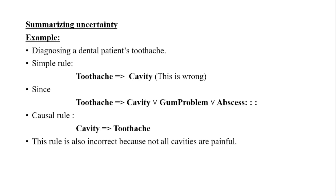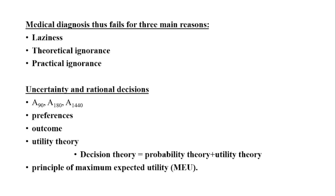Summarizing uncertainty — let's see an example of diagnosing a dental patient's toothache. Consider the simple rule: toothache implies cavity. But this rule is wrong because those who experience a toothache might not all have cavities. Some may also have gum disease, abscess, or one of several other issues. This can be formulated as: toothache implies cavity or gum problem or abscess. From this simple rule we can write a causal rule. A causal rule contains cause and effect — that is, cavity implies toothache. Yet this is also incorrect because not all cavities are painful. Hence, the only way to fix the rule is by adding all the conditions that must be met for a cavity to result in a toothache.